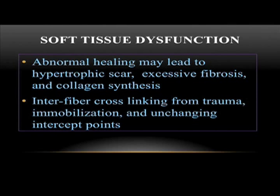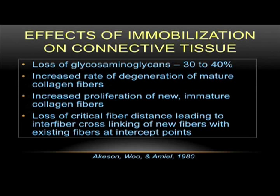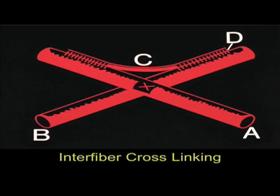What are the effects of immobilization on connective tissue? We know we lose glycosaminoglycans 30 to 40%. With this comes increased degeneration of mature collagen fibers, increased proliferation of new immature collagen fibers, and loss of the critical fiber distance — the space between collagen and elastin — leading to interfiber cross-linking of new fibers with existing fibers at intercept points. This comes from excellent work by Atkinson, Wu, and Mill. The earliest type of cross-link is a hydrogen bond — the weakest. You may find tissue changes quickly in soft tissue work; that's probably a hydrogen bond. If it stays and gets more adhered, it becomes a covalent bond, which is a much stronger bond, and can progress to fibrotic or adhered tissue.